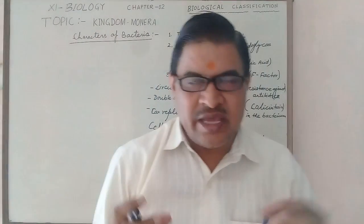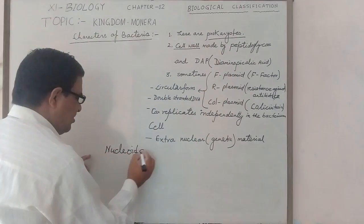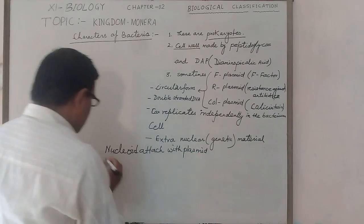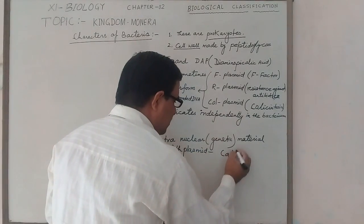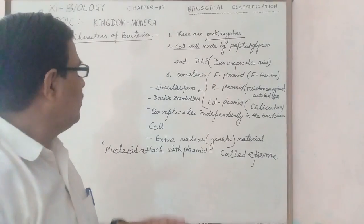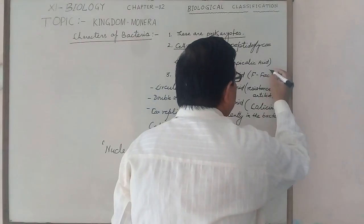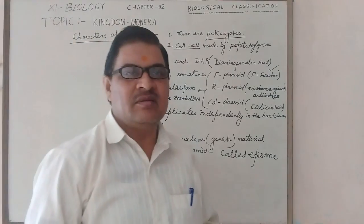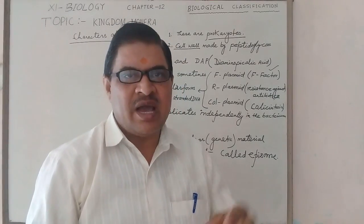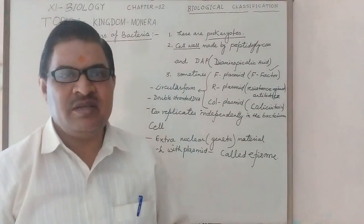Plasmids are of three types. The first is F-plasmid (also called F-factor), which transfers genetic material from one bacterium cell to another by forming a tube-like structure called a conjugation tube during the conjugation process of genetic transfer. The second type is R-plasmid, which shows resistance against antibiotics.